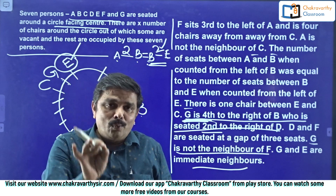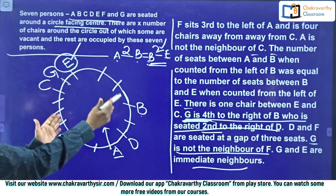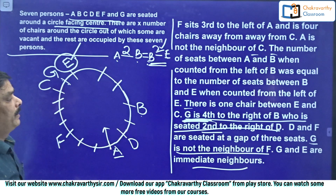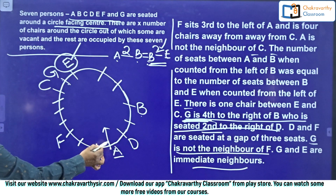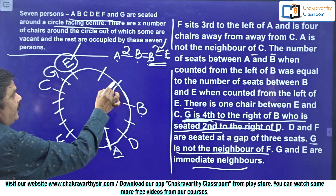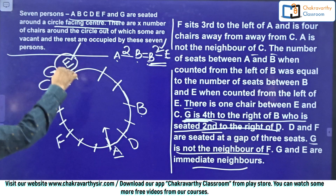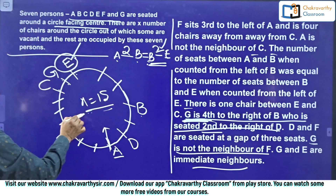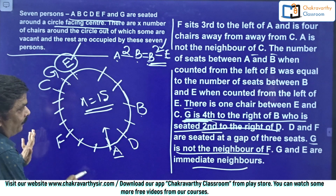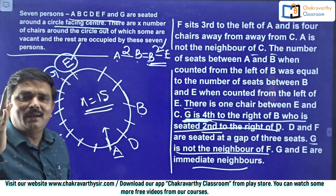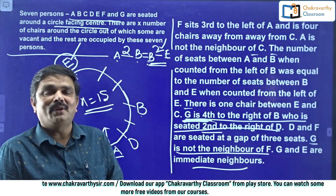After two or three classes I take advanced and very advanced level questions from mains examinations — you can solve them very easily. Now counting the total number of places from A: 1, 2, 3, 4, 5, 6, 7, 8, 9, 10, 11, 12, 13, 14, 15 — so X equals 15. If they ask how many places there are, the answer is 15. They may ask any question based on this arrangement. Thank you very much students — I'll meet you in the next session with some other questions.